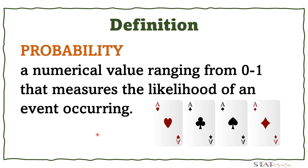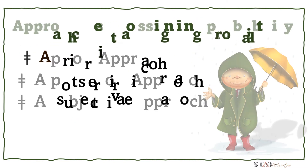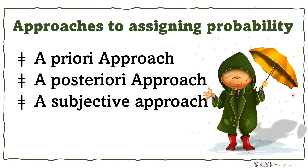Let's define some terms. First, probability. It is a numerical value ranging from 0 to 1 that measures the likelihood of an event occurring. There are three basic interpretations of probability: the a priori approach, the a posteriori approach, or a subjective approach.